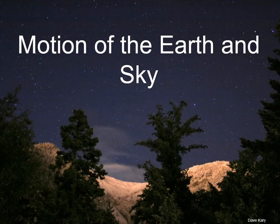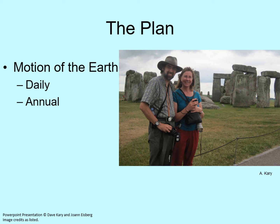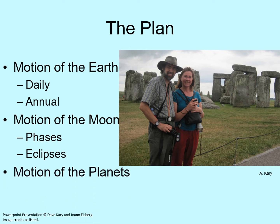It's time to get back to astronomy. In this chapter, we're going to focus on the motion of the Earth, Moon, and planets, and how these affect what we see in the sky. We're going to start by looking at the motion of the Earth. We'll see how the daily and yearly movement changes our view of the sky. Then we'll examine the Moon and talk about its phases and eclipses. Finally, we'll say a little bit about how and why the planets move in the sky.